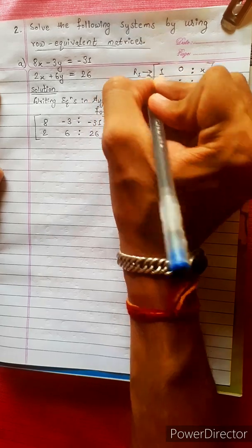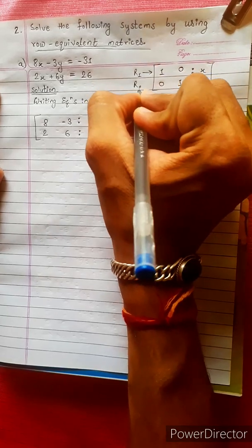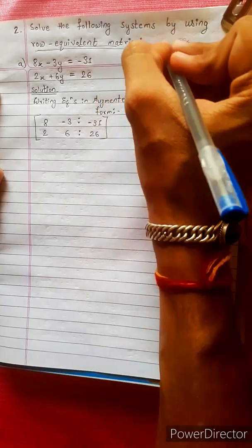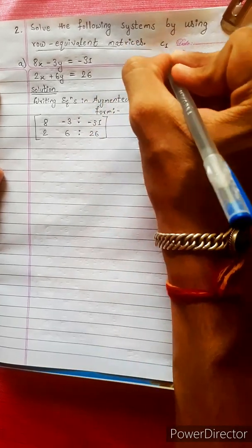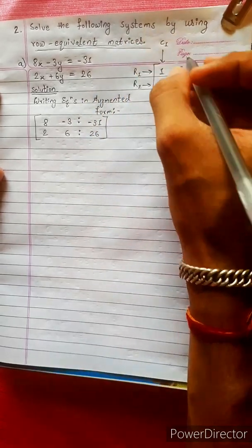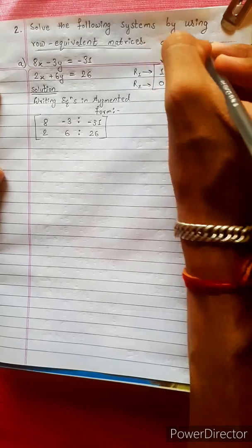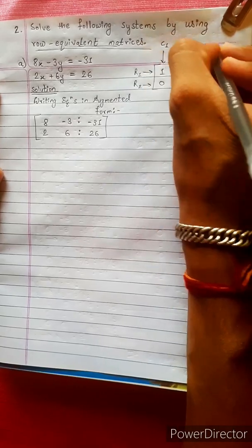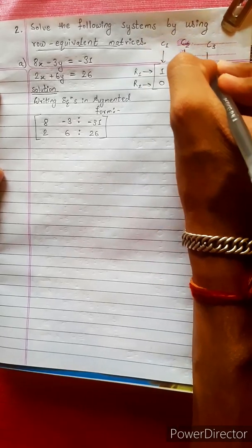1st row, 2nd row, 1st column, 2nd column, 3rd column.